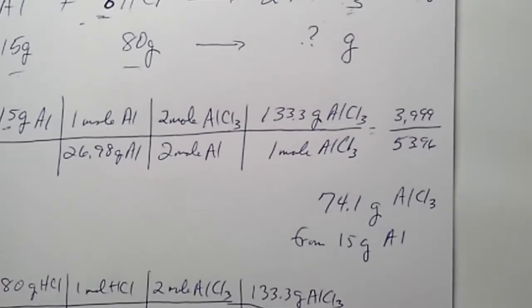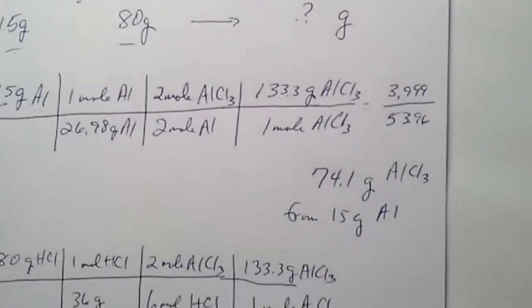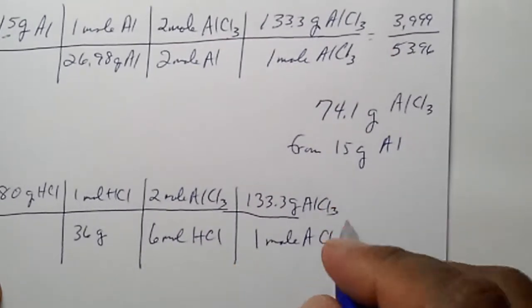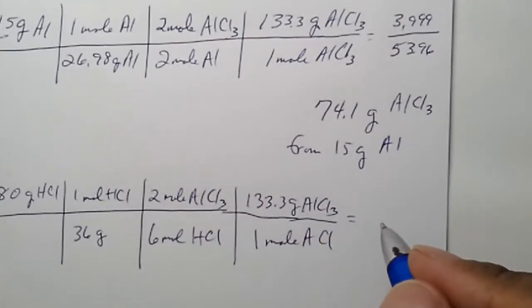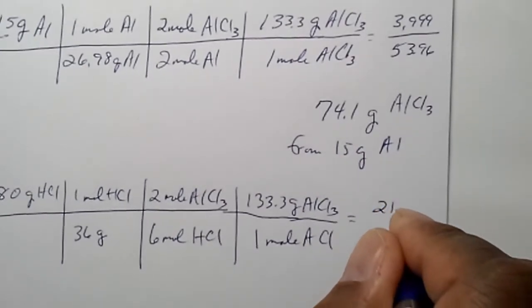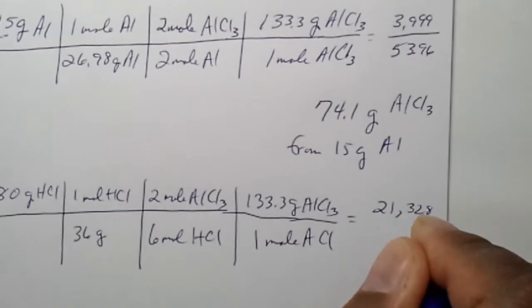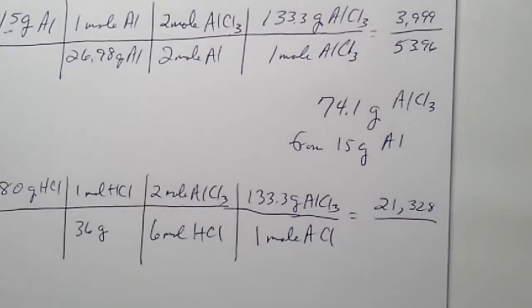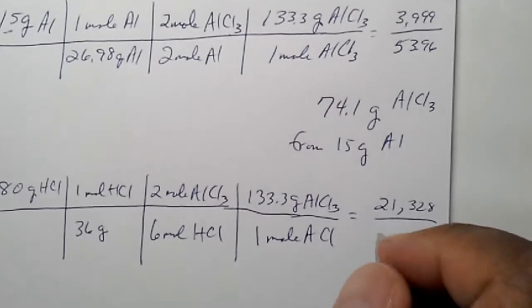All right. You can see that. And our answer here is eighty times one times two times one thirty-three equals twenty-one thirty-two-eight divided by thirty-six times six times one equals forty-two.